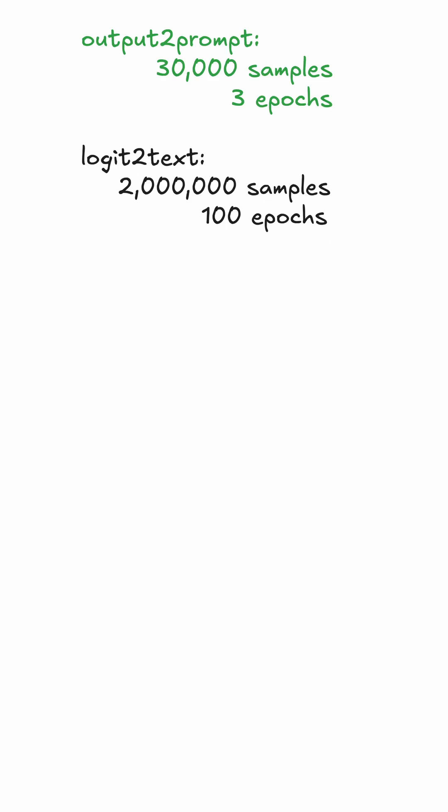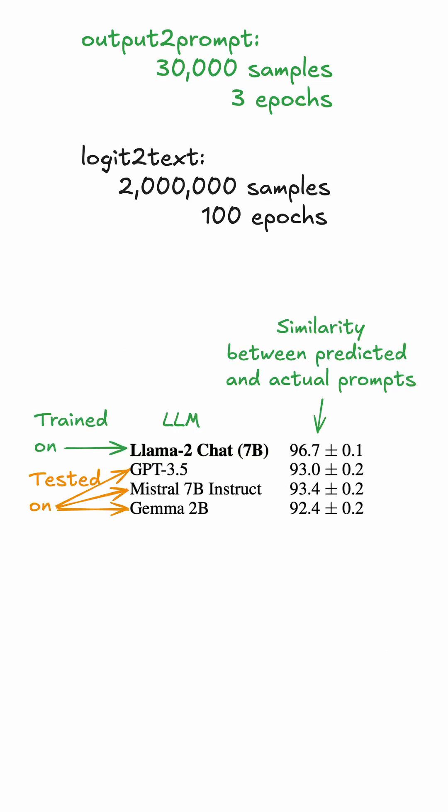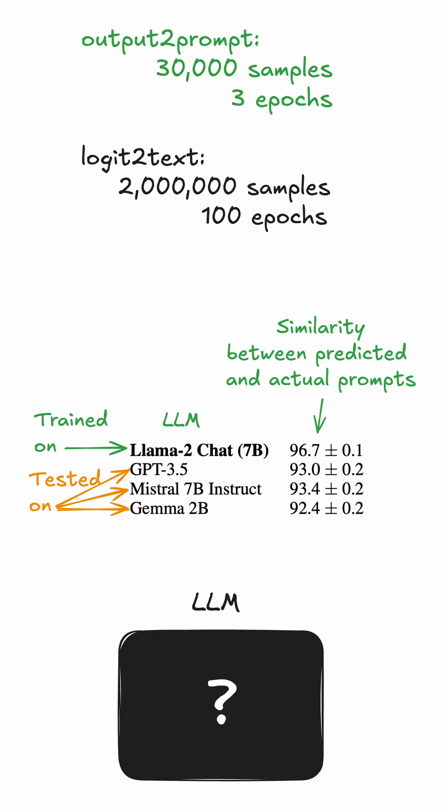Compared to prior methods, OutputToPrompt is cheap to train, does fairly well in predicting prompts for LLMs that it wasn't trained on, and it does this while treating the LLM as a total black box.